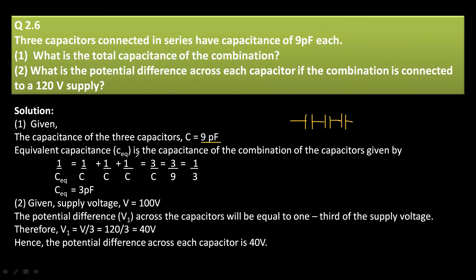Equivalent capacitance when it is connected in series is given by 1 by C equivalent is equal to 1 by C plus 1 by C plus 1 by C because all the capacitance have same values. C1, C2, C3 we can do here too. But here it says that the three capacitors values are given by 9 picofarad, so we keep here only C.